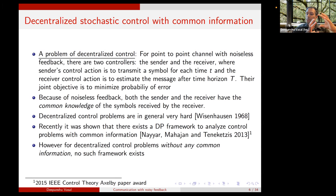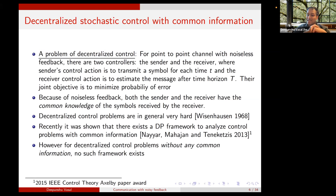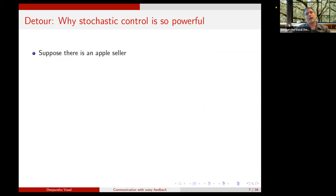Decentralized control problems are pretty hard. I refer to the counterexample by Witsenhausen in 1968, where he showed that a simple two-controller linear Gaussian LQG problem has no optimal linear policy — showing how deceptively hard these problems are. But recently in 2013 it was shown that there exists a dynamic programming framework to analyze control problems with common information. For noisy feedback — decentralized control without common information — there is no such dynamic programming framework, and that is why these problems are really hard.